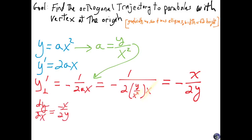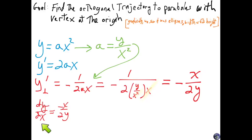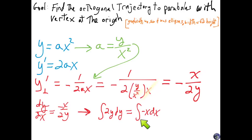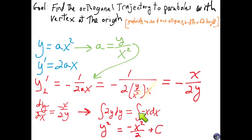This is the differential equation for our red family: dy/dx equals negative x over 2y. This is clearly separable — multiply the 2y over and the dx over, then throw integral signs on there. The integral of 2y dy equals the integral of negative x dx. The left side integrates to y squared, the right side to negative x squared over 2, plus a constant C.